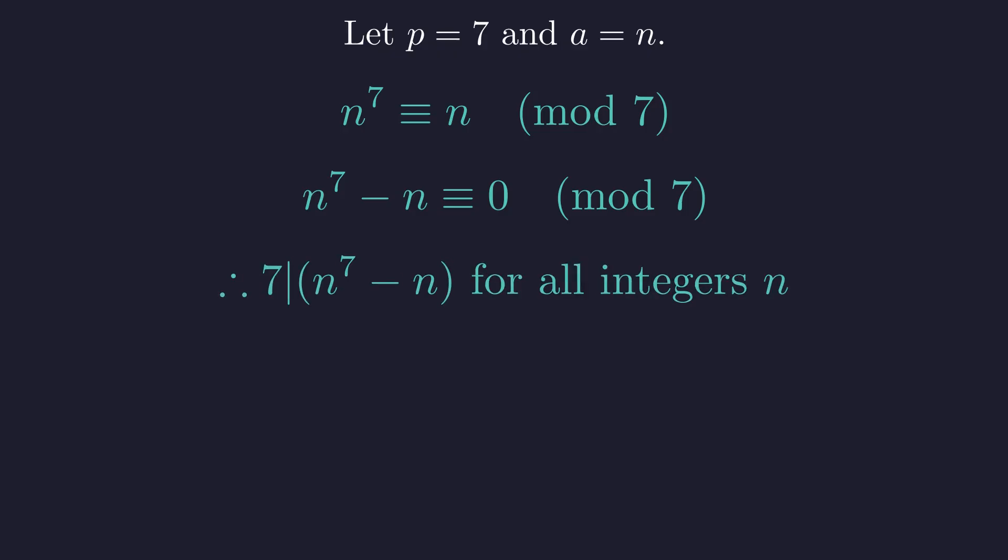It means 7 always divides our expression. So there we have it. 7 always divides n^7 - n for any integer n. Fermat's Theorem delivered this result with elegant directness.